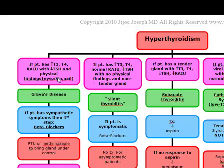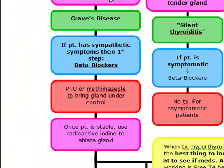The first patient has physical findings such as eye, skin, and nail findings — eye findings being the Graves' ophthalmopathy, where you're talking about the proptosis and the exophthalmus. If the patient has these physical findings with an increased T3 and T4, as well as an increased radioactive iodine uptake with a decrease in their TSH, you're thinking Graves' disease.